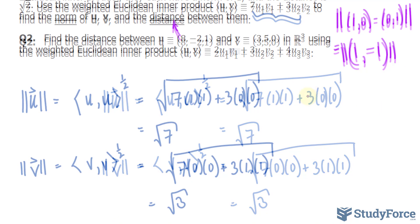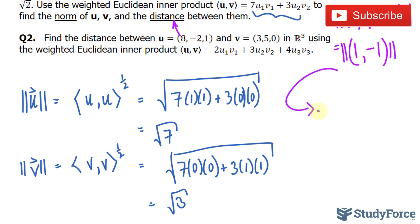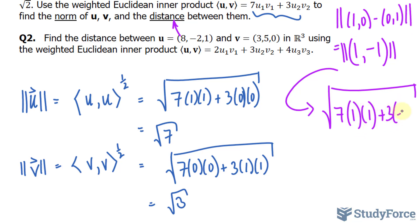Let me make some more room. So, I have this part equal to the square root, 7 times 1 times 1, plus 3 times negative 1 times negative 1. The answer to the inside part here, the radicand is 10. The square root of that is the distance between u and v. That's the answer to question number 1.